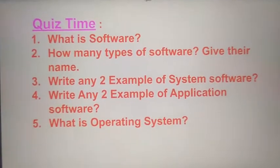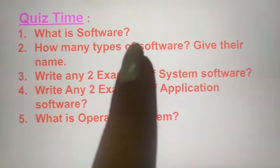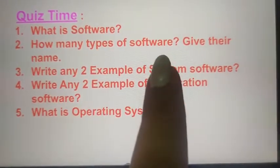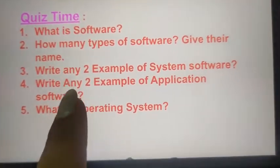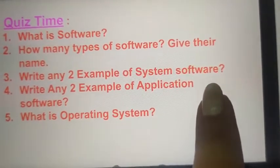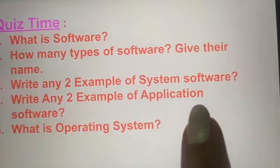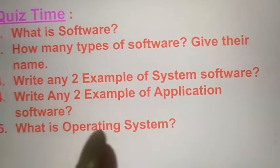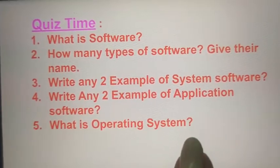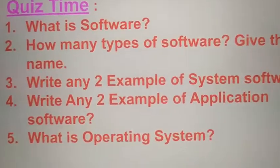Now listen and answer these questions: What is software? How many types of software are there — give their names. Write any two examples of system software. Write any two examples of application software. And what is an OS or operating system? Thank you for watching this video.